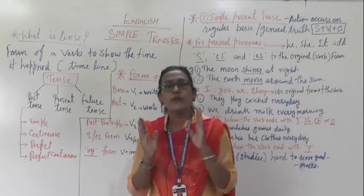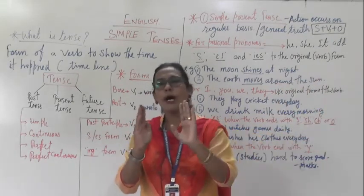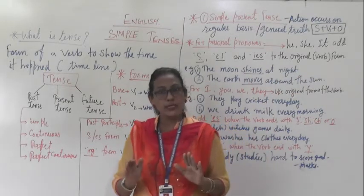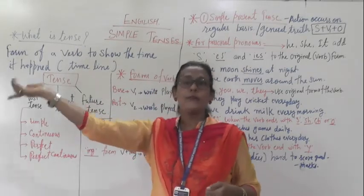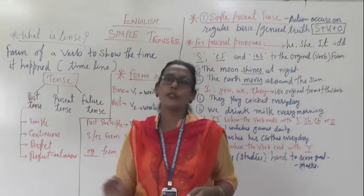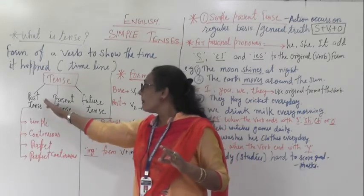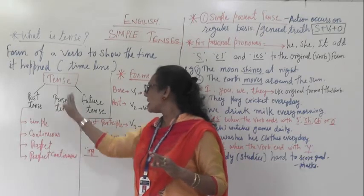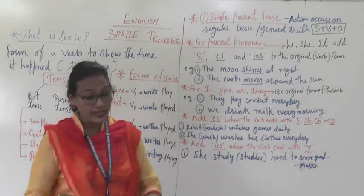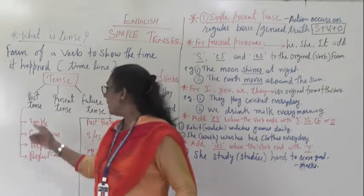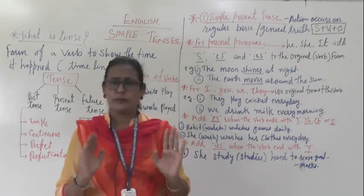The main thing: past tense refers to things which happened a few minutes before, yesterday, or the day before yesterday. Present tense is what is going on now. Future tense is what is going to happen tomorrow. In this lesson — lesson number 9, simple tenses — we are going to learn simple past tense, simple present tense, and simple future tense only.